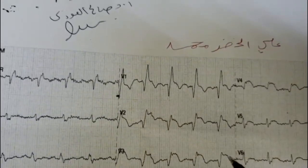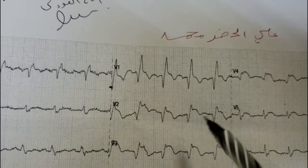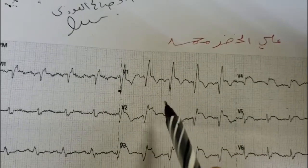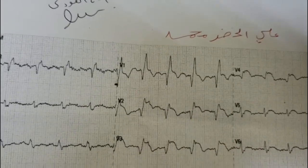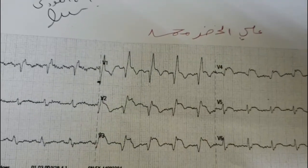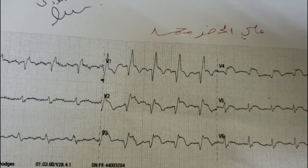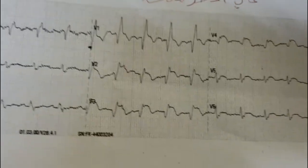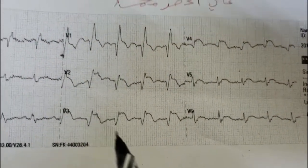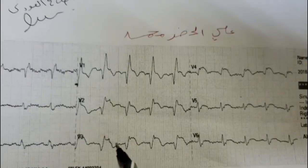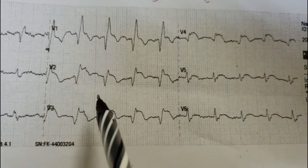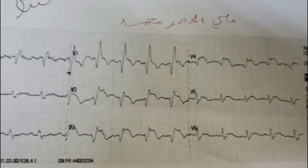Because right bundle branch block only changes the terminal activation of the ventricle, but in myocardial infarction the changes involve the initial part of the QRS complex, it is easy to read a myocardial infarction in the presence of right bundle branch block.